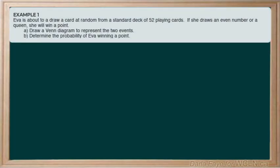Let's dig into an example. The example reads, Eva is about to draw a card at random from a standard deck of 52 playing cards. If she draws an even number or a queen, she will win a point. The first part asks us to draw a Venn diagram to represent these two events, and then part B is going to ask us to calculate the probability of winning a point. Let's start with the Venn diagram and we'll come back to part B in just a moment.